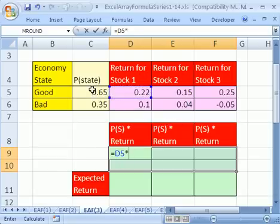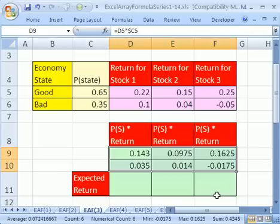Times. And we want 0.65 but we want to lock it going across but not down. So, I'm going to hit my F4 key 1, 2, 3 times. And then Ctrl Enter.